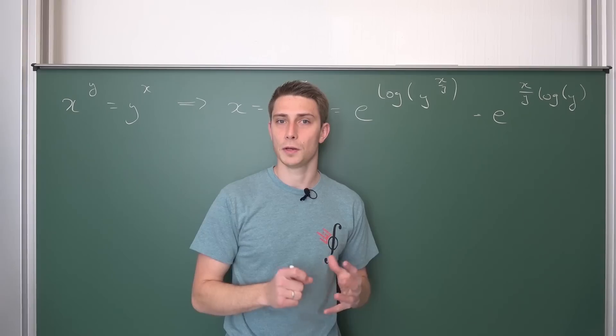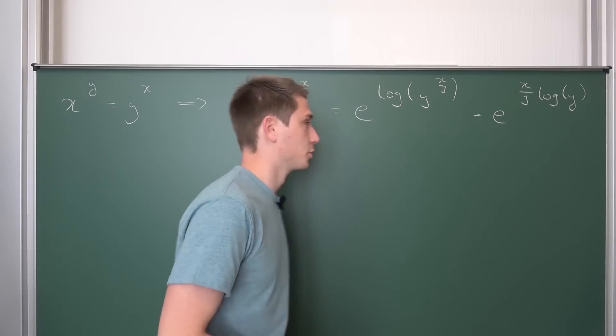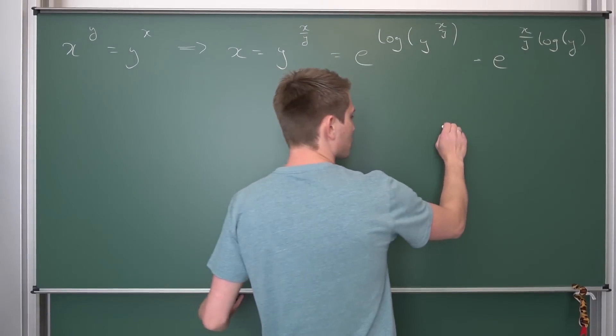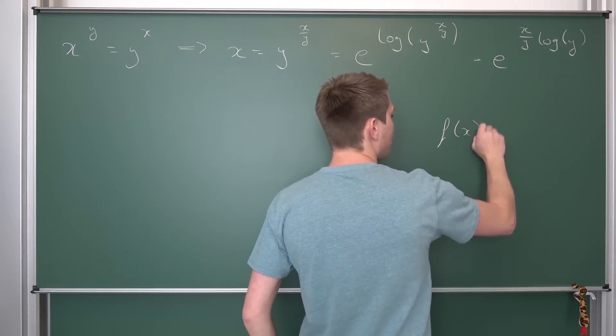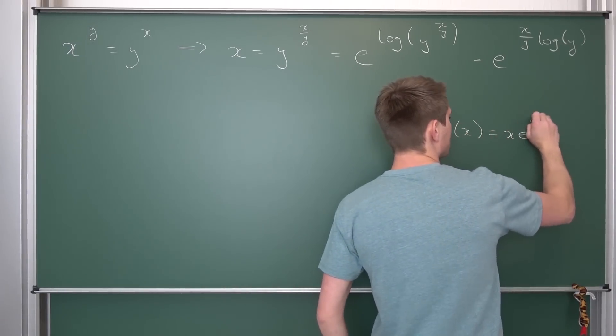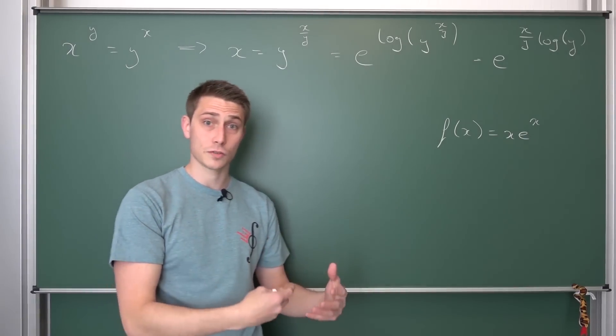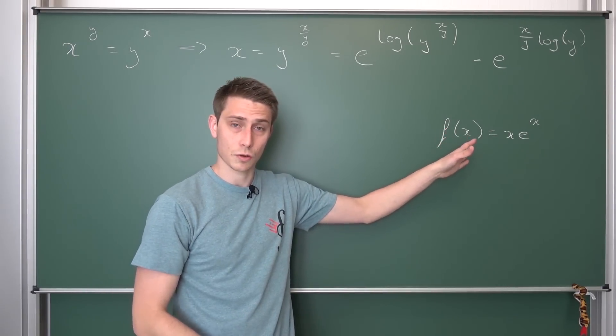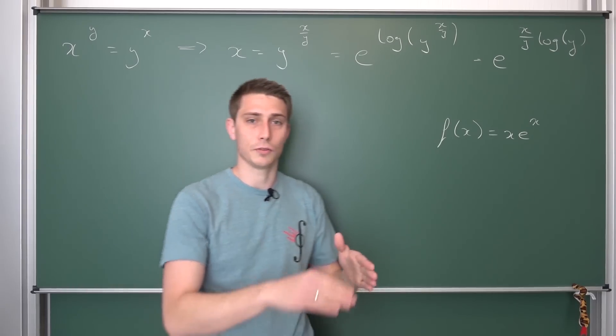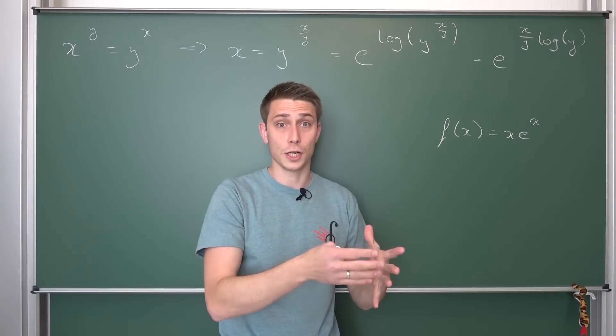Now here comes some information about the Lambert W function. The Lambert W function is defined as the inverse function of the following function f of x, being defined as x times e to the x. And if you apply an inverse function, if it's locally invertible, for example, to this function on a certain interval, the Lambert W function actually has two branches.